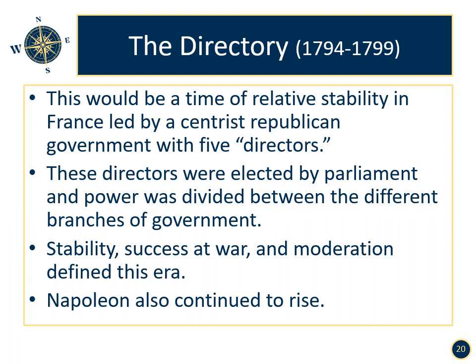The Directory, 1794 to 1799. This would be a time of relative stability in France, led by a centrist republican government with five directors. A republic is a country without a monarch. These directors were elected by parliament and power was divided between the different branches of government. Stability, success at war, and moderation defined this era.